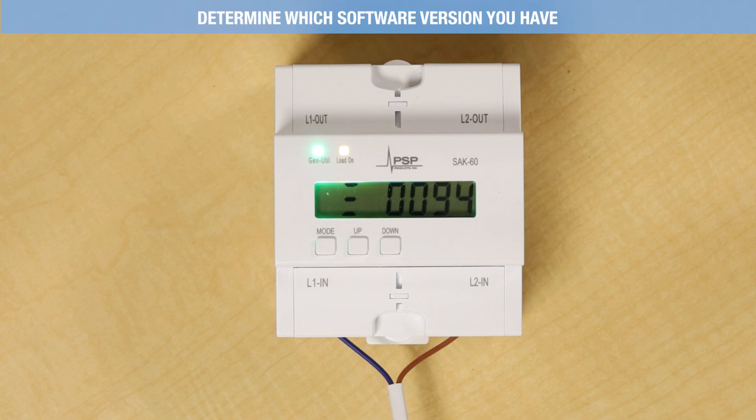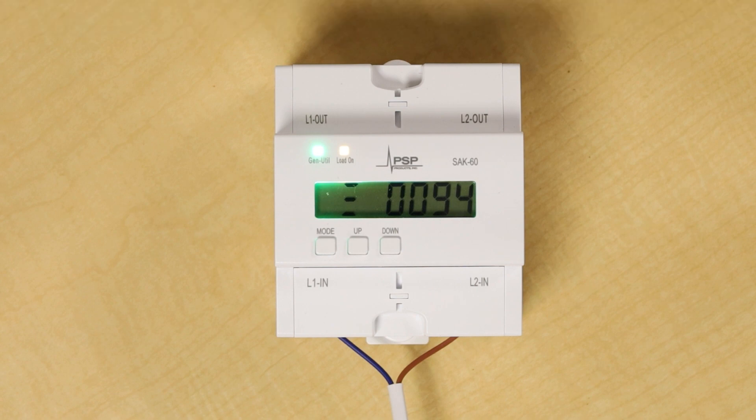To determine which version of the SAK60 you have, hold the mode button for about 3 seconds and see if two digits appear on the display or if you have one letter followed by four numbers. In version 3, you will see the two digits, and then you can scroll to the relevant master mode.